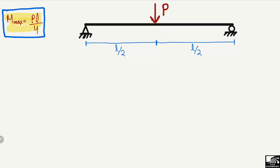We have a concentrated load P acting at the center point of a simply supported beam. The load is acting at L/2 from the left support and L/2 from the right support, meaning the load is at the center of the beam. This is a pointed or concentrated load — there is no uniformly distributed load.